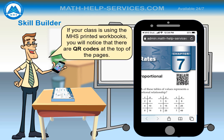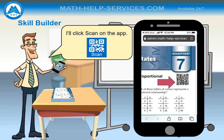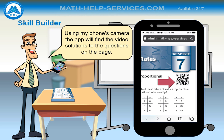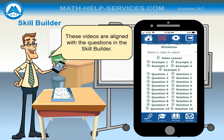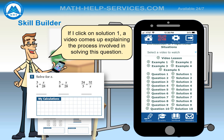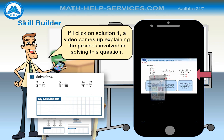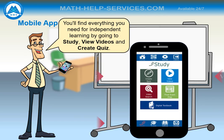If your class is using the MHS printed workbooks, you will notice that there are QR codes at the top of the pages. Click Scan on the app and, using your phone's camera, the app will find the video solutions to the questions on the page. These videos are aligned with the questions in the Skill Builder. If you click on Solution 1, a video comes up explaining the process involved in solving that question. So whenever you are stumped on a question, use the QR code to find the perfect video to get you started. You'll find everything you need for independent learning by going to Study, View Videos, and Create Quiz.